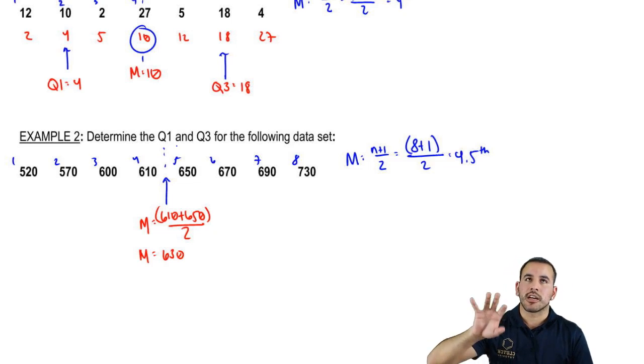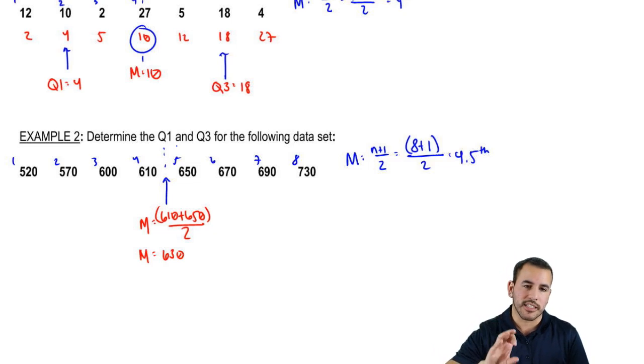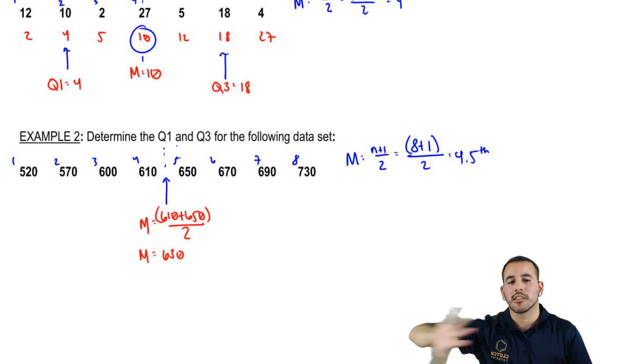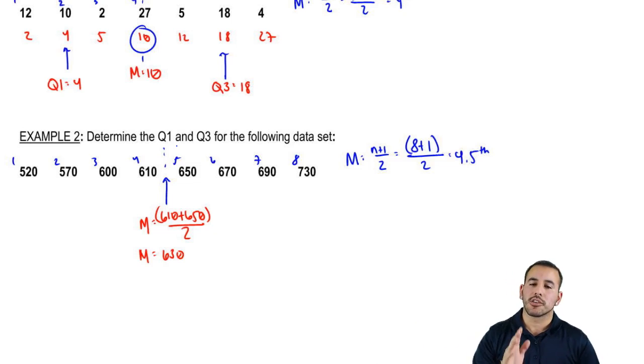It's not that 610 and 650 are the median - there's something in the middle between those two that's the median. So we're now failing to include 610 and 650 in terms of the data on the left and the data on the right. The data on the left includes 520, 570, 600, and 610 - four numbers on the left. Same thing on the right - four numbers: 650, 670, 690, and 730.